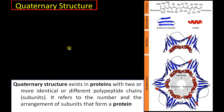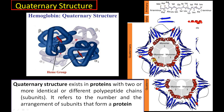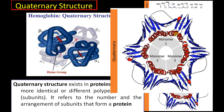Finally, the quaternary structure exists in proteins with two or more identical or different polypeptide chains, each called a subunit. A classical example is hemoglobin, made up of two alpha chains and two beta chains — alpha 1, alpha 2, beta 1, and beta 2. The quaternary structure refers to the number of different subunits or polypeptide chains that make a functional protein, and also the interactions between these subunits.